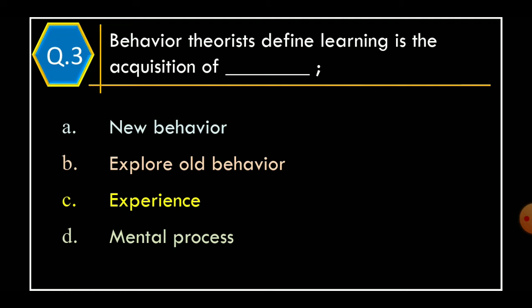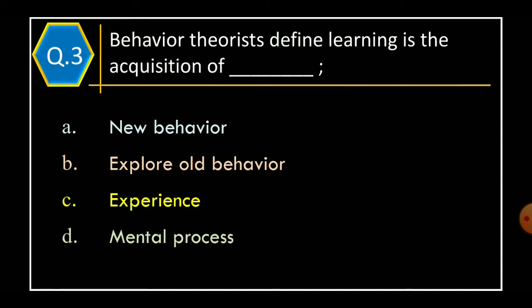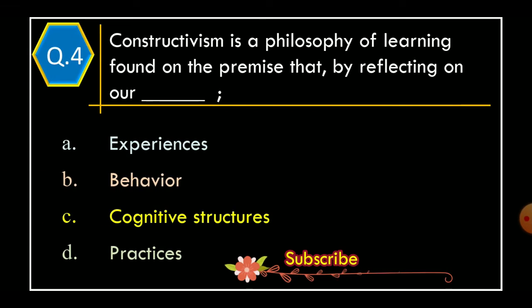Question 3: Behavior Theorist Define Learning is the acquisition of _____. Option A: New Behavior. Option B: Explore old behavior. Option C: Experience. Option D: Mental Process. The correct option is Option A, New Behavior.